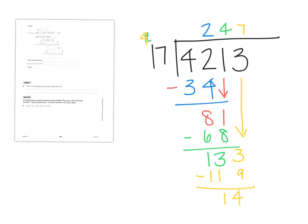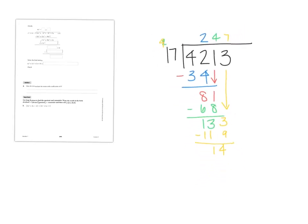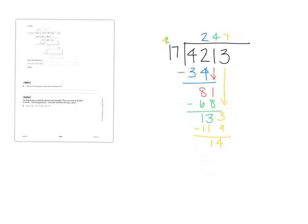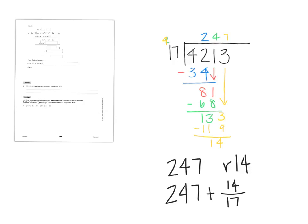Do I keep going or do I stop here? If I were to keep going, it would just give me the decimal form of my answer, but I don't want that. So we could say our answer is 247. And what about 14? The remainder. Typically you'd write R14, but today we're going to write it as 247 plus 14 over 17 — same idea, just a different notation.